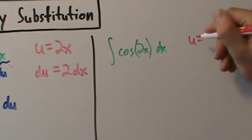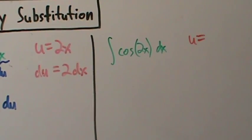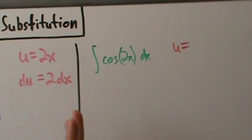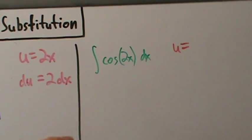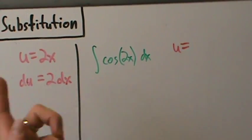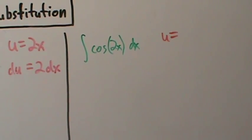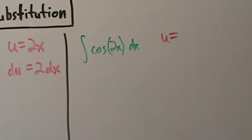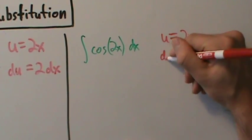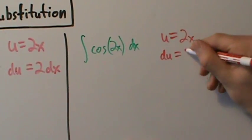If that doesn't jump out at you — if you can't find the function and its derivative — just let u be the inside guy and see if that works. If it doesn't work, you might have to make a different substitution or try something else. Some substitution problems can be trickier and we'll talk about those in later examples. Same substitution here: let u be 2x, take the differential, and we get du equals 2 dx.